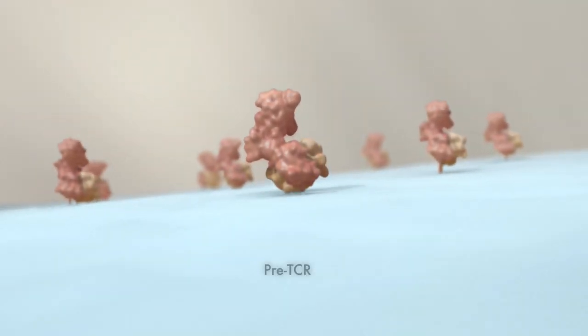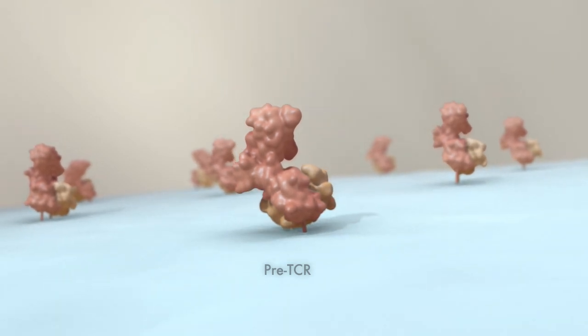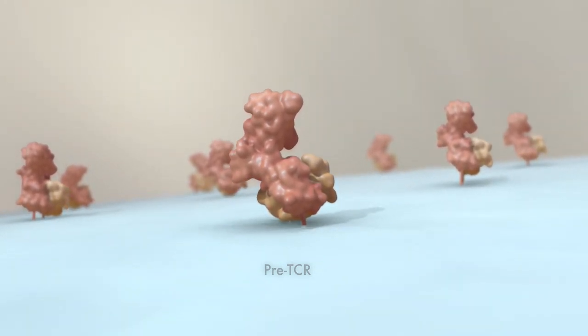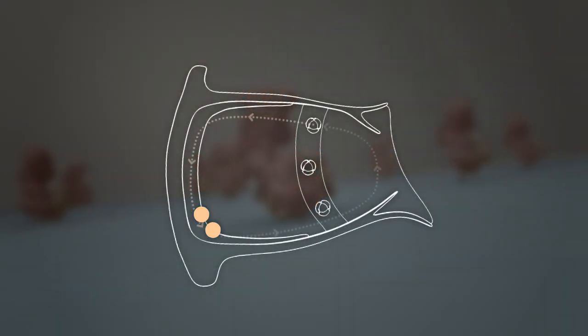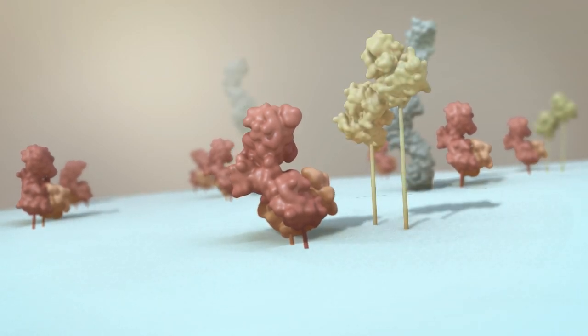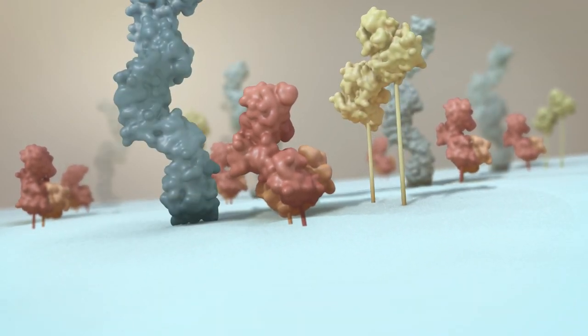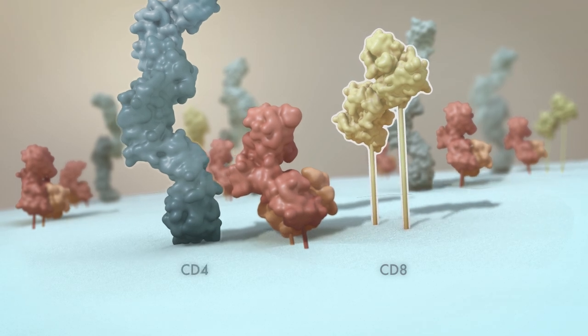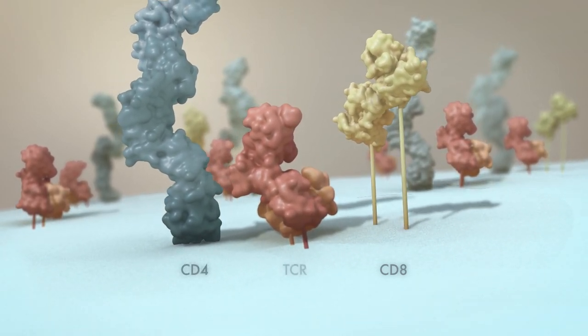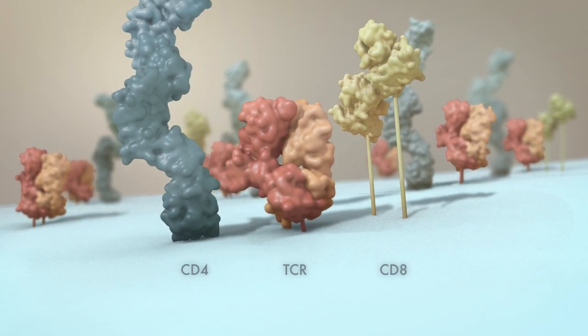Through this movement, DN thymocytes begin to assemble the cell surface pre-TCR complex. Successful formation of the pre-TCR complex initiates cellular proliferation, signals for further development into double positive, or DP, thymocytes that express both CD8 and CD4 co-receptors, and finally, signals for completing the assembly of the TCR complex.